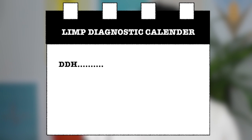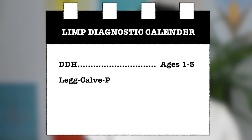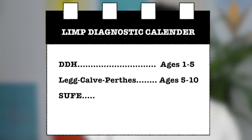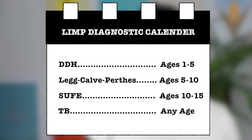DDH, or developmental dysplasia of the hip, affects children between the ages of 1 and 5. Legg-Calvé-Perthes Disease affects children between the ages of 5 and 10. And finally, slipped upper femoral epiphysis, or SUFE, affects children between the ages of 10 and 15.